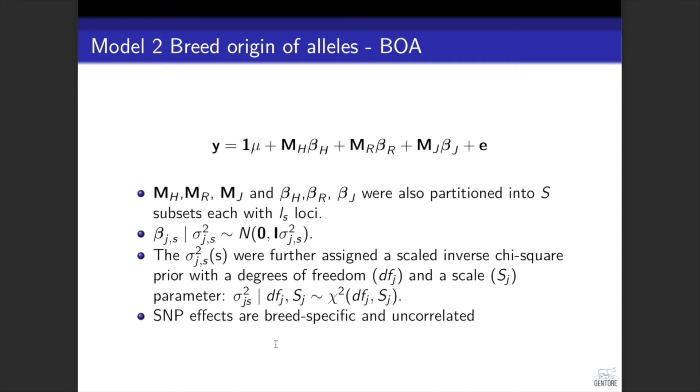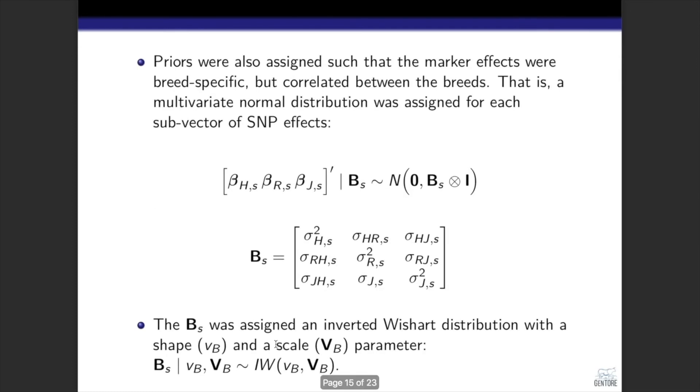In the simplest case, this means that we assumed breed-specific SNP effects, which are also uncorrelated between the breeds. We also assigned priors such that the SNP effects are breed-specific but correlated. This means that we assigned a multivariate normal prior for each sub-vector of SNP effects. And this allowed us to rely on local correlations for the breeds, rather than a genome-wide correlation.